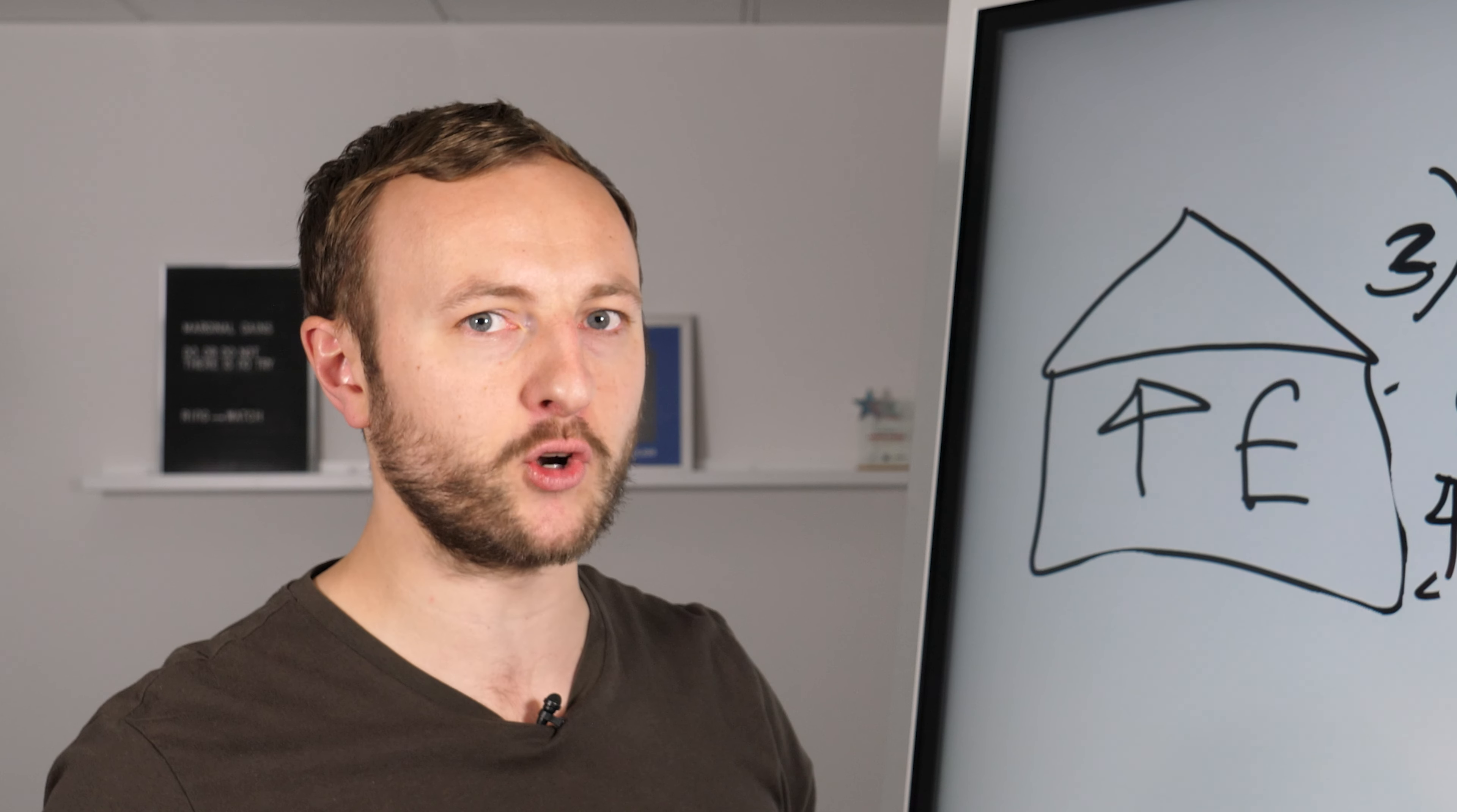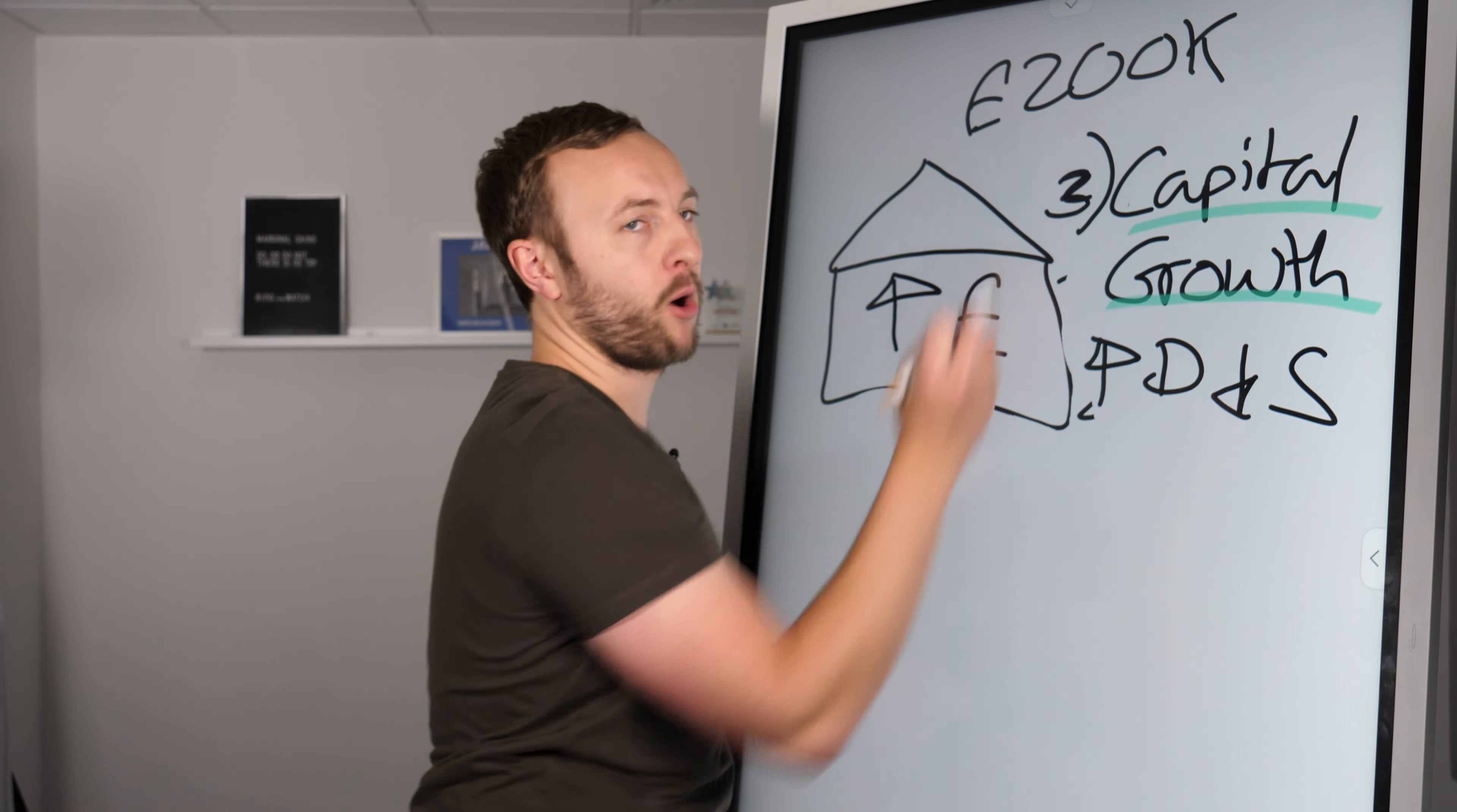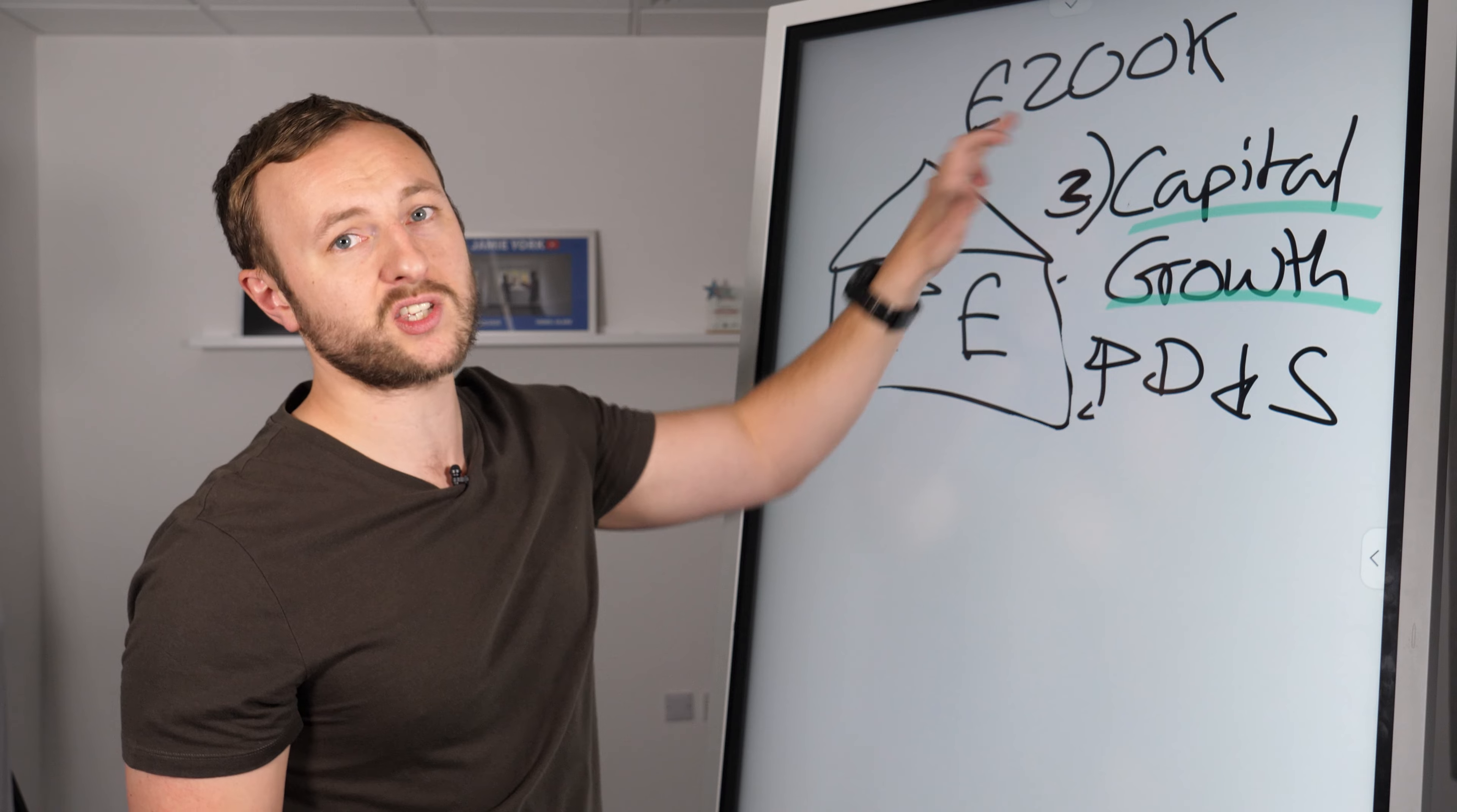Now, why did I mention leverage earlier as being an important link to this? Because the capital growth is on the £200,000 value of this property. So if you've got £150,000 in a mortgage, it doesn't just grow the £50,000 that's your capital, it grows the asset.